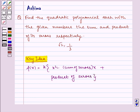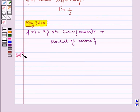Now, let us write the solution for our problem. It is given to us that sum of zeros is equal to root 2 and product of zeros is equal to 1 by 3.